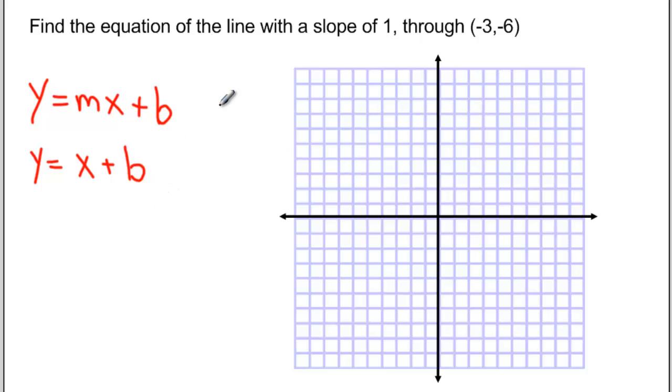One way that we can find our missing y-intercept is to plot the point negative 3 and negative 6. So there's the point negative 3, negative 6. And then using the slope of 1, find some additional points that are on the line.